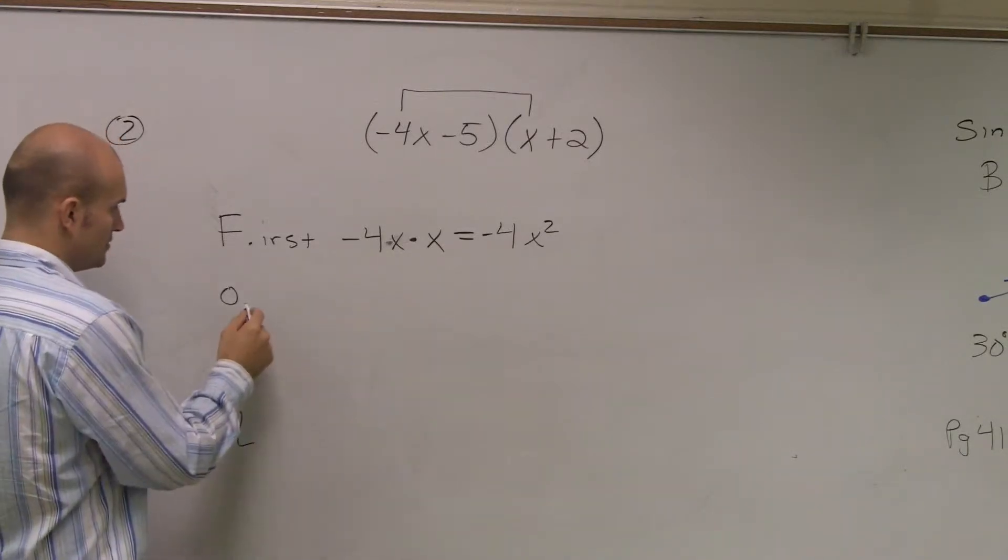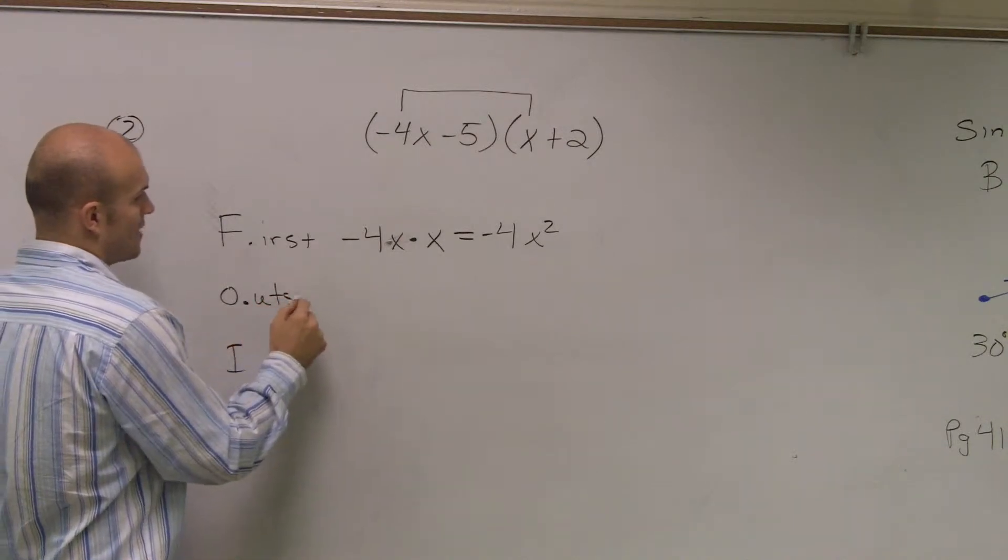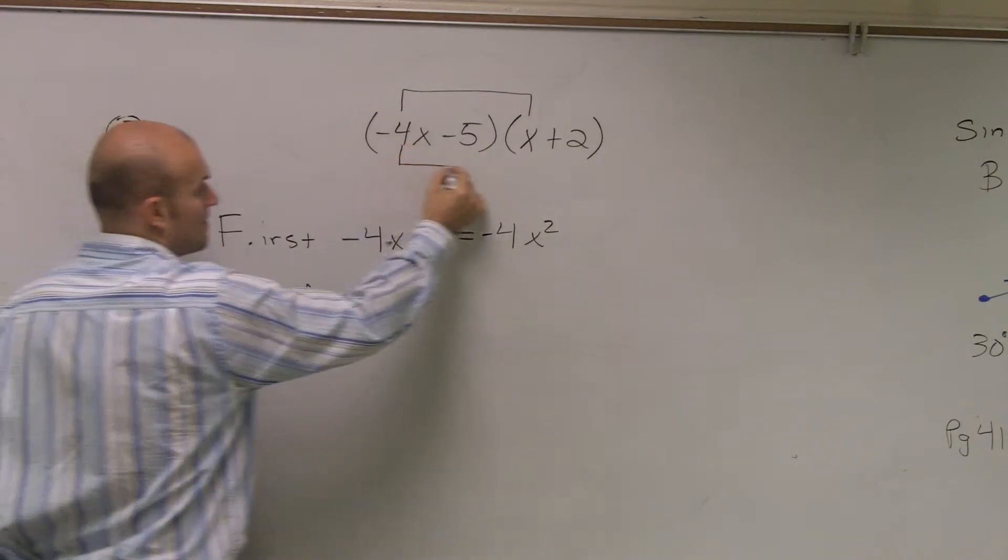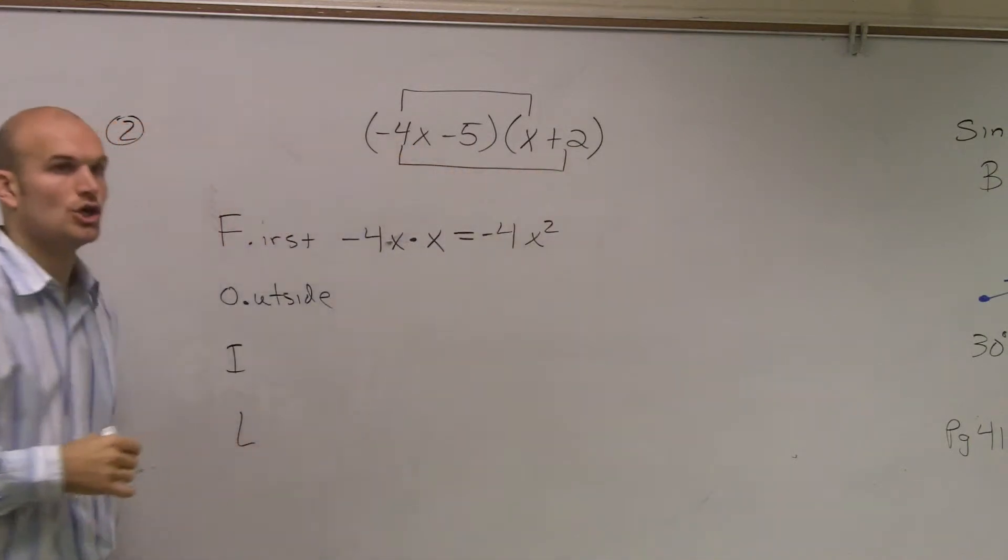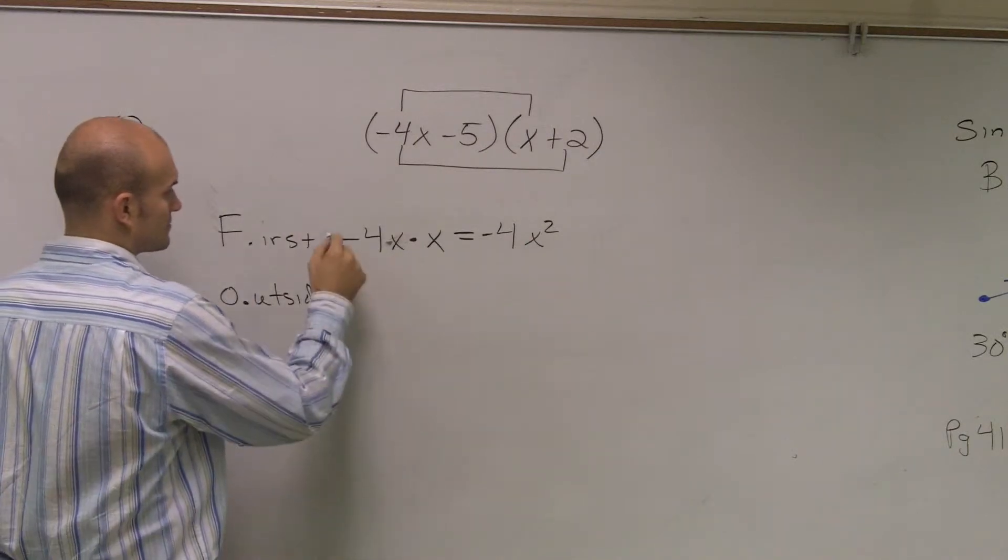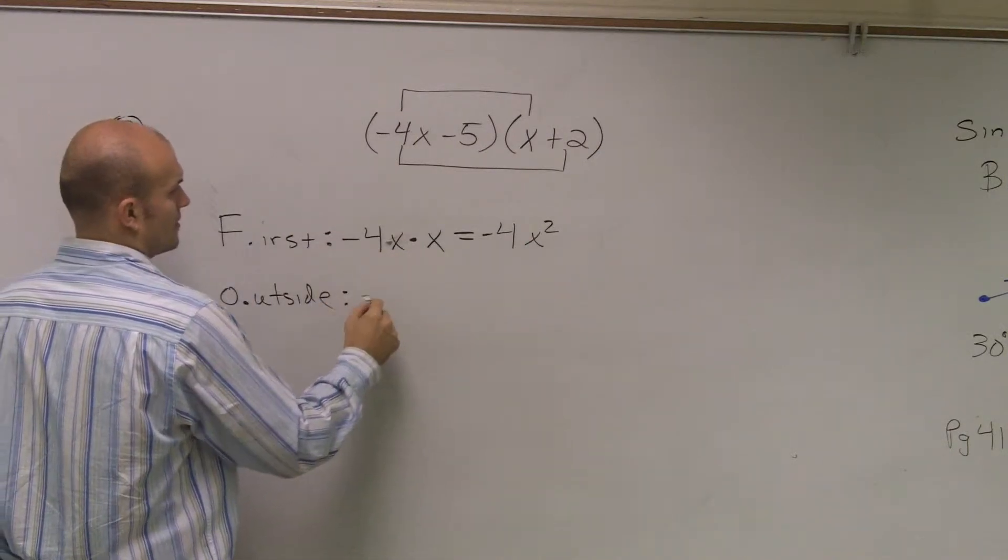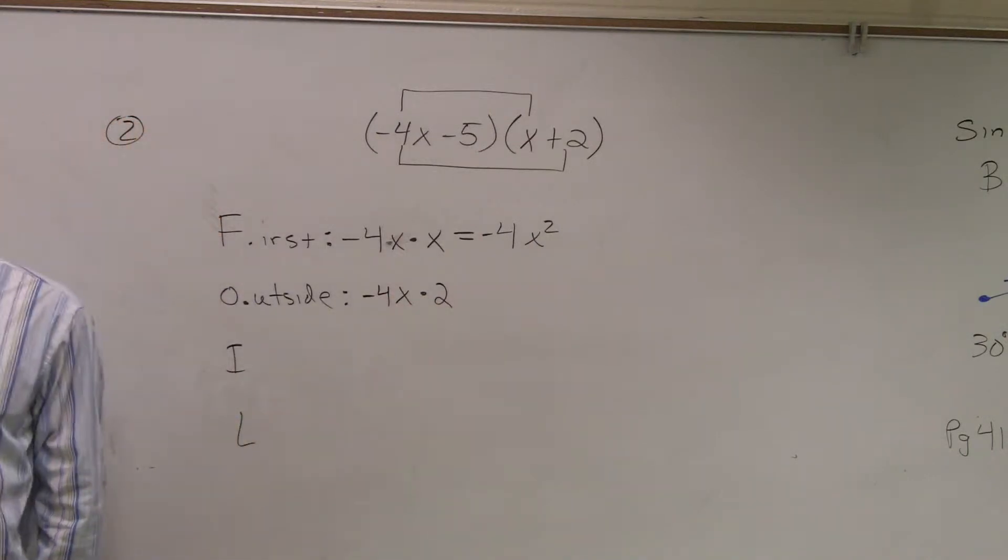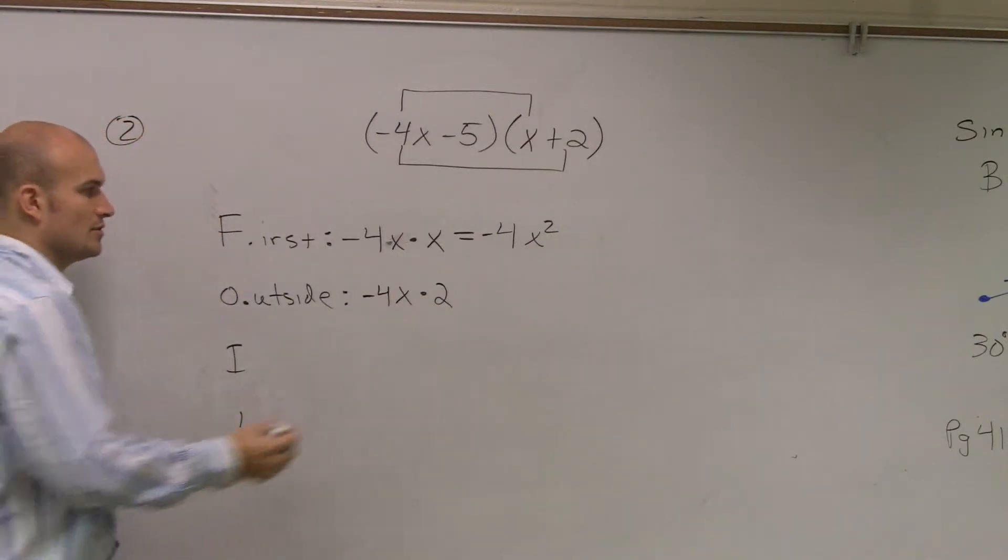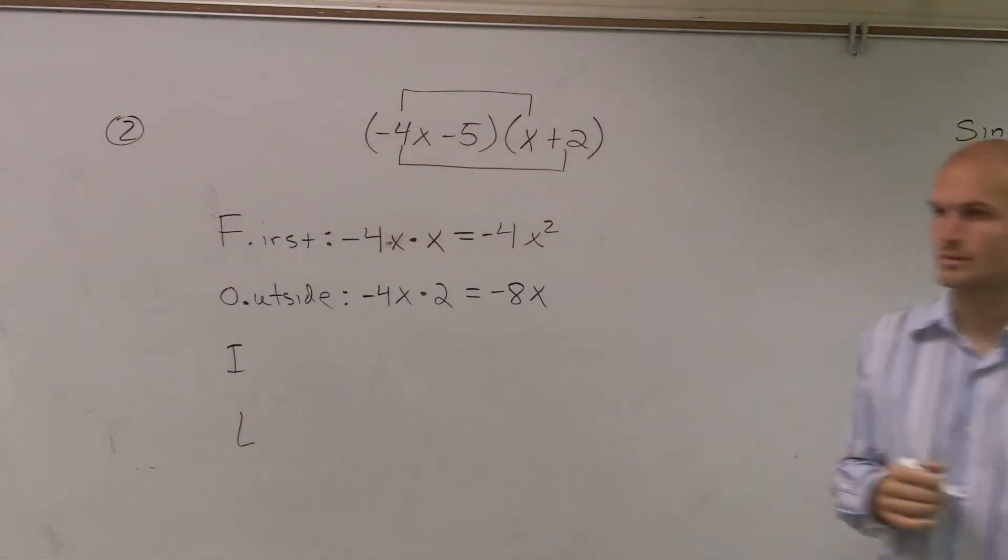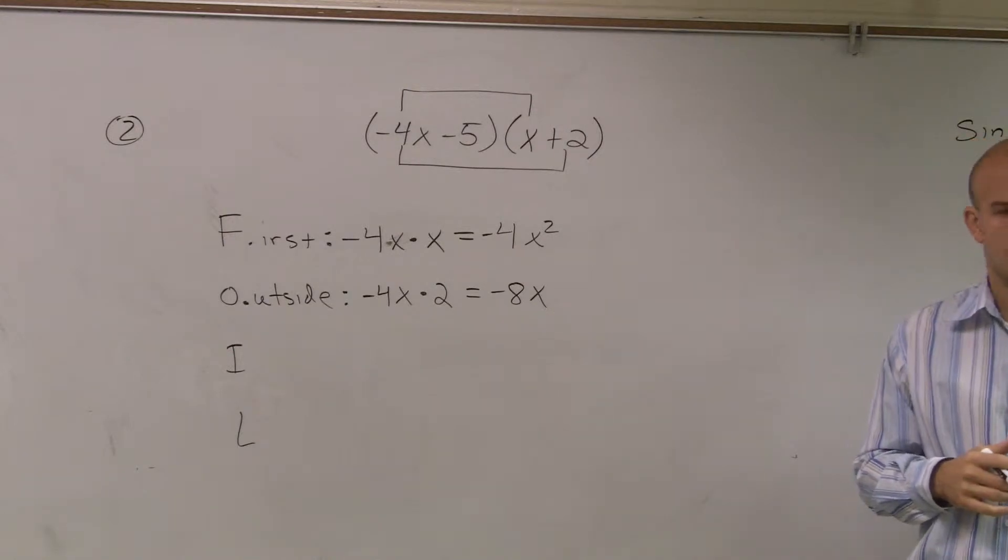The O in FOIL represents outside. So now what I do is I just multiply the outer terms, the ones around like the outside of your two binomials. So that's going to be negative 4x times 2. Well, negative 4x times 2 is going to give you negative 8x.